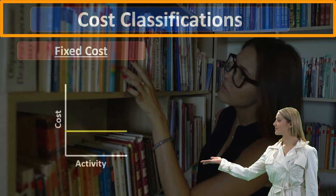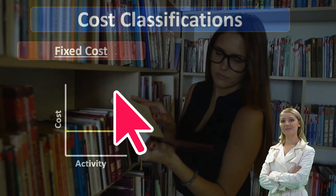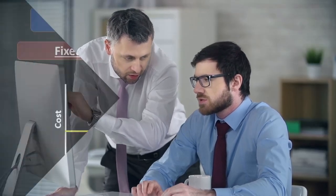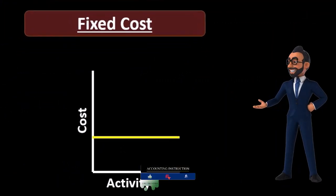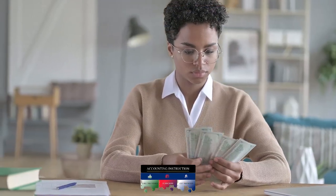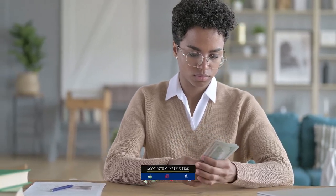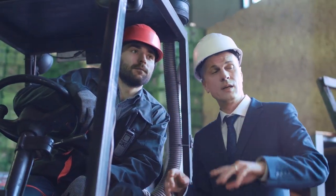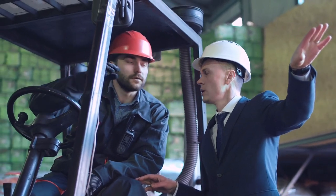We're going to classify costs by behavior. You may think, what does that mean? Do costs have behavior? Well, costs do have behavior in that they act in certain ways in relation to other activities. We're going to classify the two types of costs: fixed costs and variable costs. This type of classification is not included in financial accounting, so if you're going from financial accounting to managerial accounting, this is going to be a new concept. The reason we have cost classifications by behavior is that it really helps with projections — it helps us determine how costs act so we can make projections based on different levels of production.